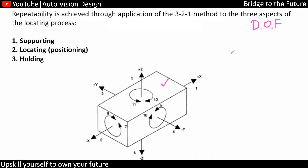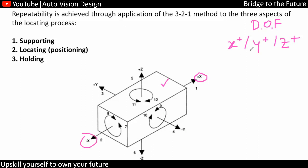Degrees of freedom will be something like we are going to have the motion with respect to x, y, z axis. Here you can imagine we are going to have positive x, positive y, and positive z. If you consider positive as well as negative, we are going to have 6 degrees of freedom in translation.